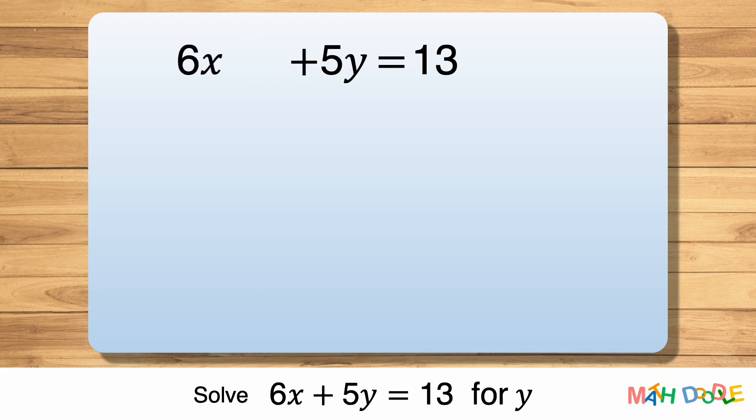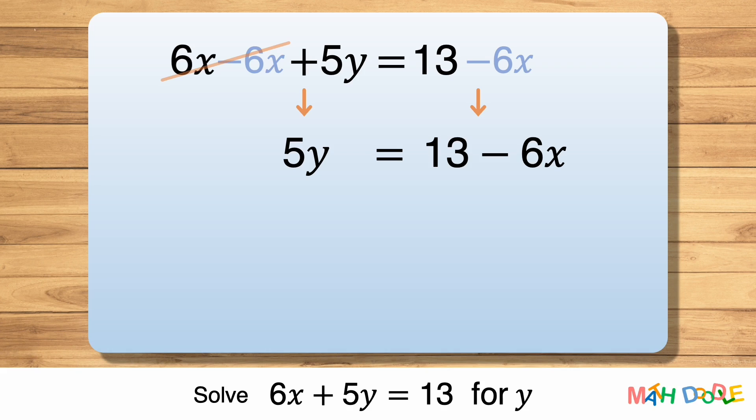To do this we are going to subtract 6x from both sides of the equation. Here it is important to treat both sides of the equation equally. After subtracting 6x we have 5y on the left side of the equation, and the right side of the equation becomes 13 minus 6x.